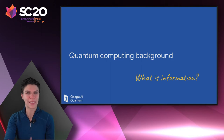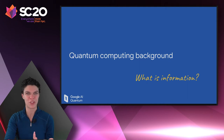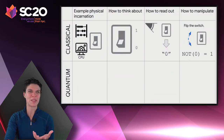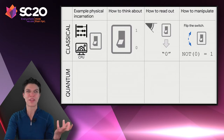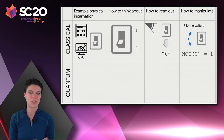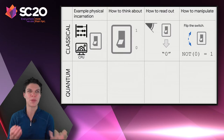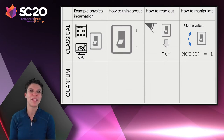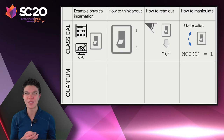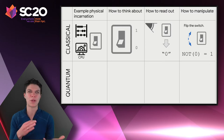Before we get into what a qubit is, it makes sense to take one step back and think about what information is. To aid that exercise, I've made a table about information processing machines comparing the classical ones to the quantum. With classical information, we usually think of a bit — like a switch that could be in the state 1 or 0. Every computing machine from the abacus to the smartphone is based on these same classical rules of physical information processing, where a bit is 1 or 0.